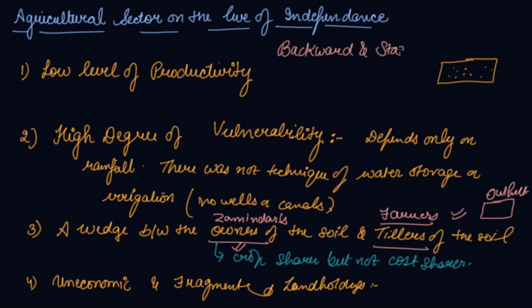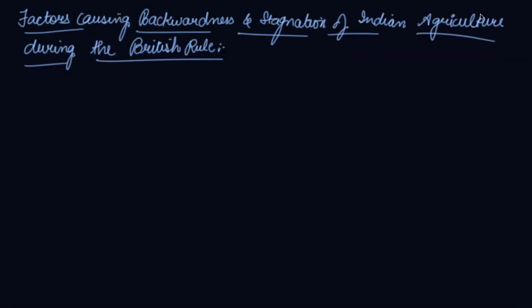There was no growth — it was a stagnant economy. Looking at the agriculture sector on the eve of independence, we examine the factors causing backwardness and stagnation of Indian agriculture during British rule. In the previous slide we saw that the agriculture sector in the Indian economy was backward and stagnant. Now what are the factors due to which the Indian economy was backward and stagnant during British rule?